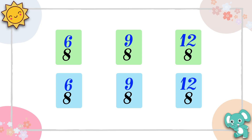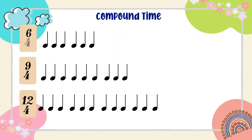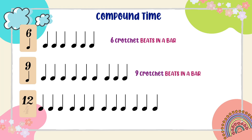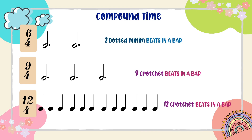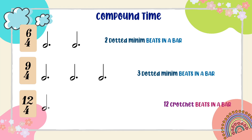Let's take a look at these three compound time signatures. A 6/4 time signature indicates that there are six crotchet beats in a bar. A 9/4 time signature has nine crotchet beats in a bar. Now, we grouped them into duple, triple, and quadruple form. A 6/4 time signature has two dotted minims in a bar. A 9/4 time signature would have three dotted minims in a bar. And the 12/4 time signature has four dotted minims in a bar.